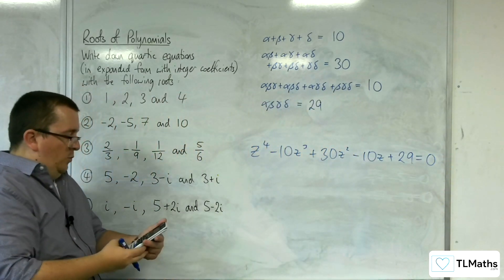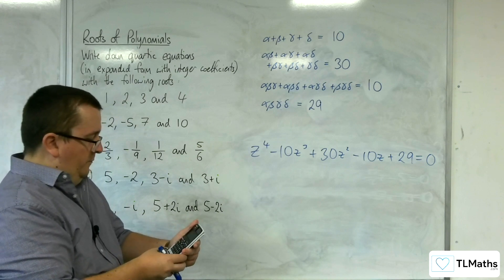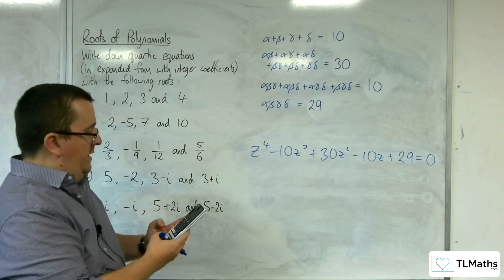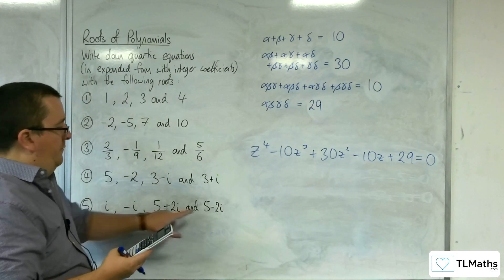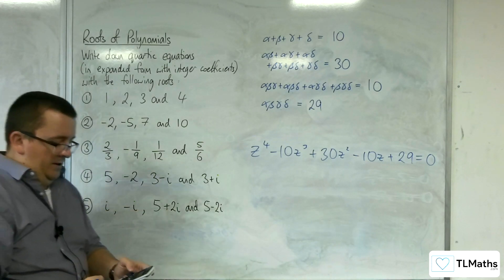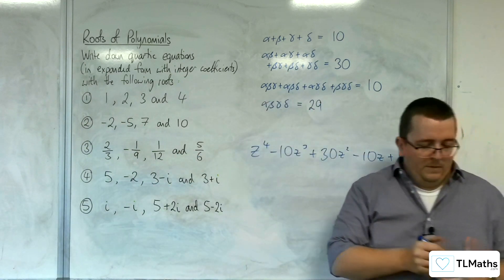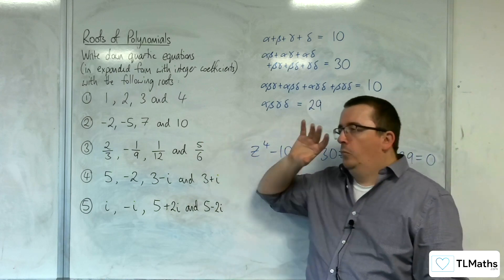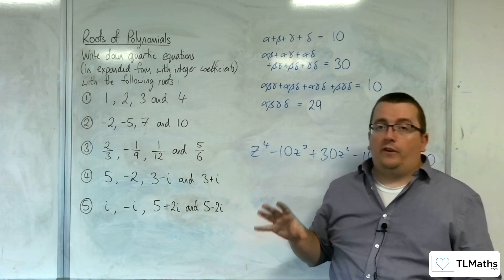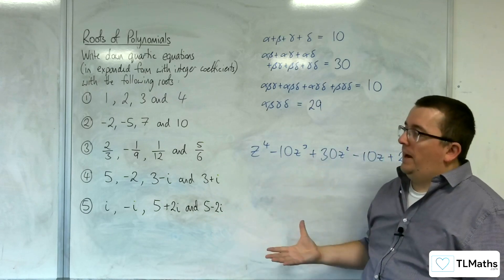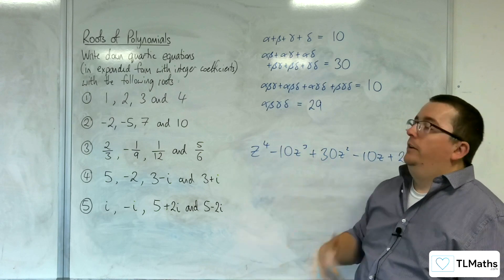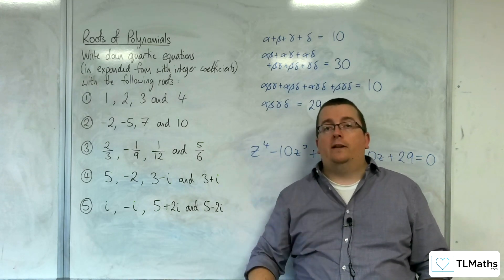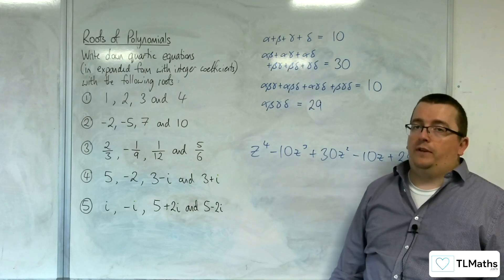Let's try that in the quartic solver. So 1, minus 10, 30, minus 10, 29. And we get 5 plus 2i, 5 minus 2i, i, and minus i. Excellent! So that is how we can do it. What I was finding difficult was remembering which ones I'd actually done. If I was doing this on paper, I would probably write each bit down so I can keep track much more easily and not make a silly mistake. But remember, you've got that quartic solver on your calculator which allows you to check your final answer to see if it's correct.